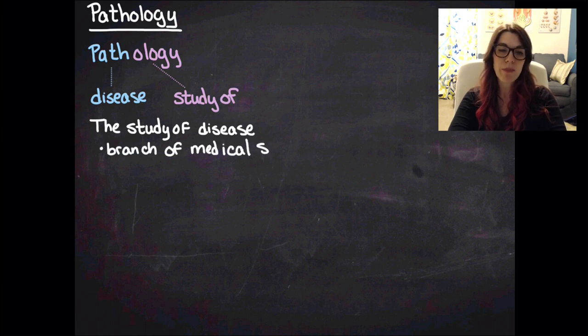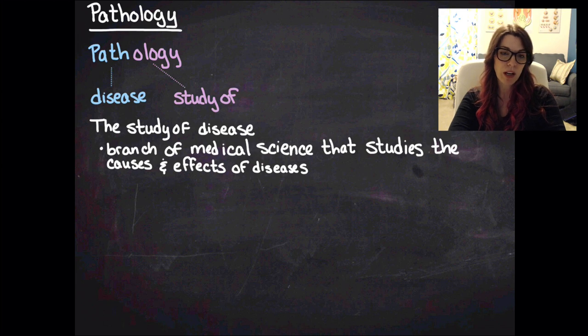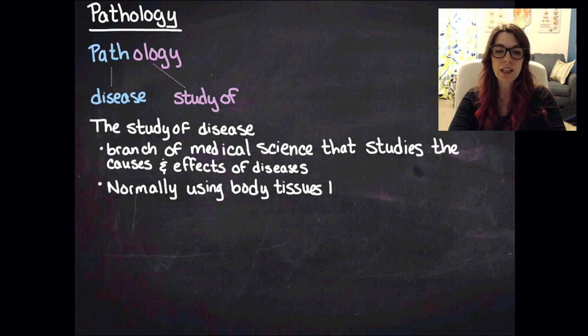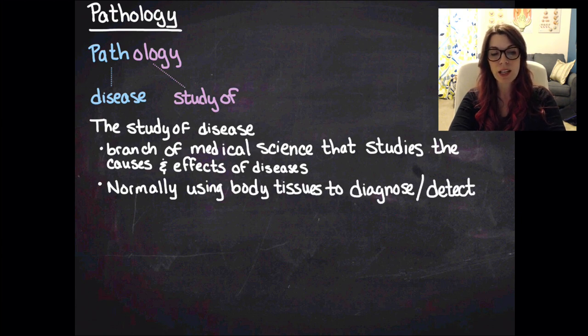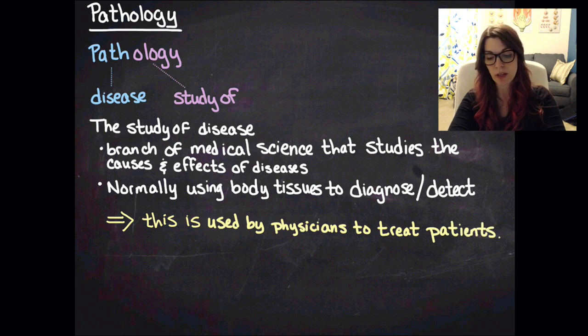Pathology is a branch of medical science that studies the causes and the effects of diseases on normal body function or on body tissue. Normally, we study pathology by using body tissues to diagnose and detect the disease. That diagnosis and detection is going to be used by physicians to actually treat patients. You'll be looking at pictures of body tissues and talking about how diseases affect the structures and function of the body.